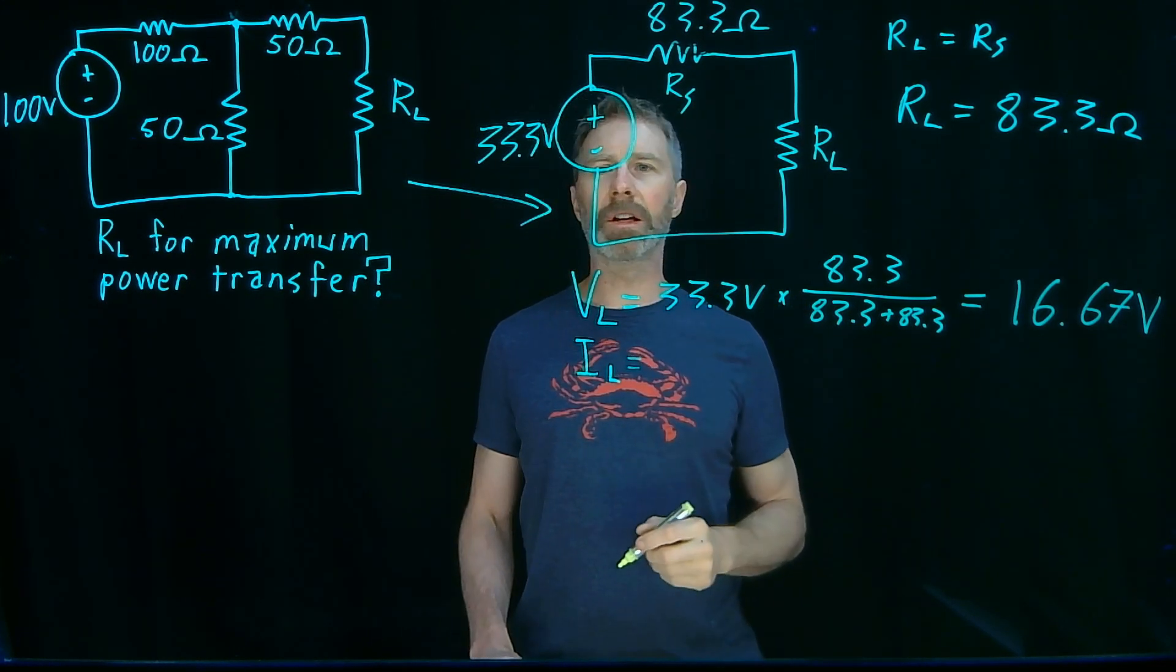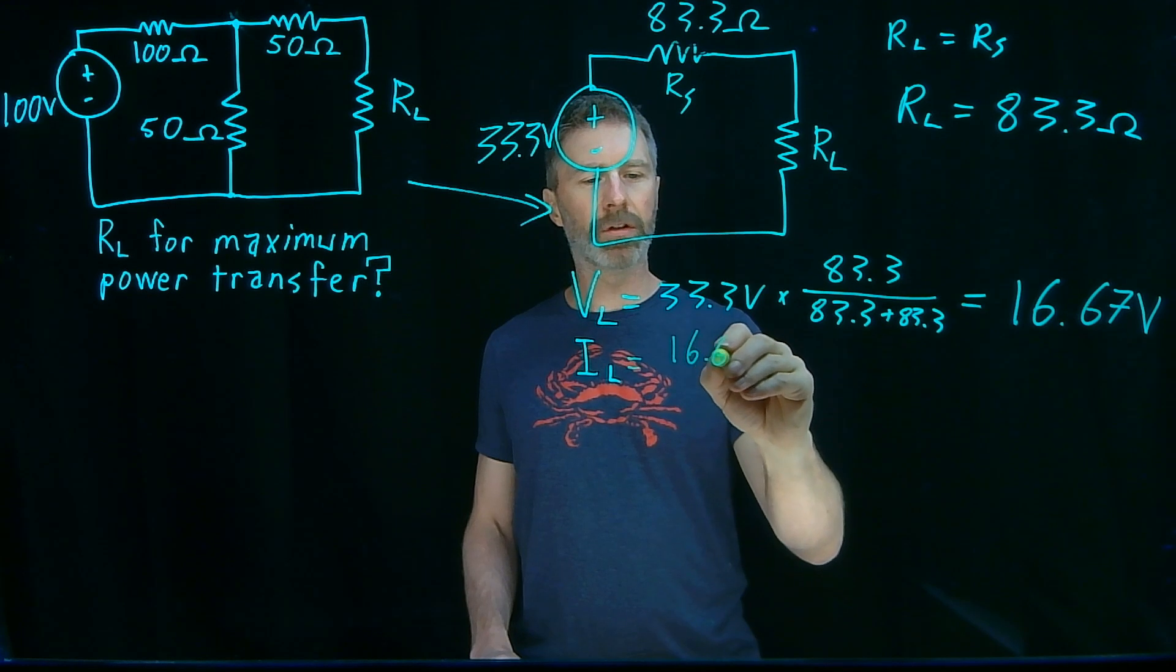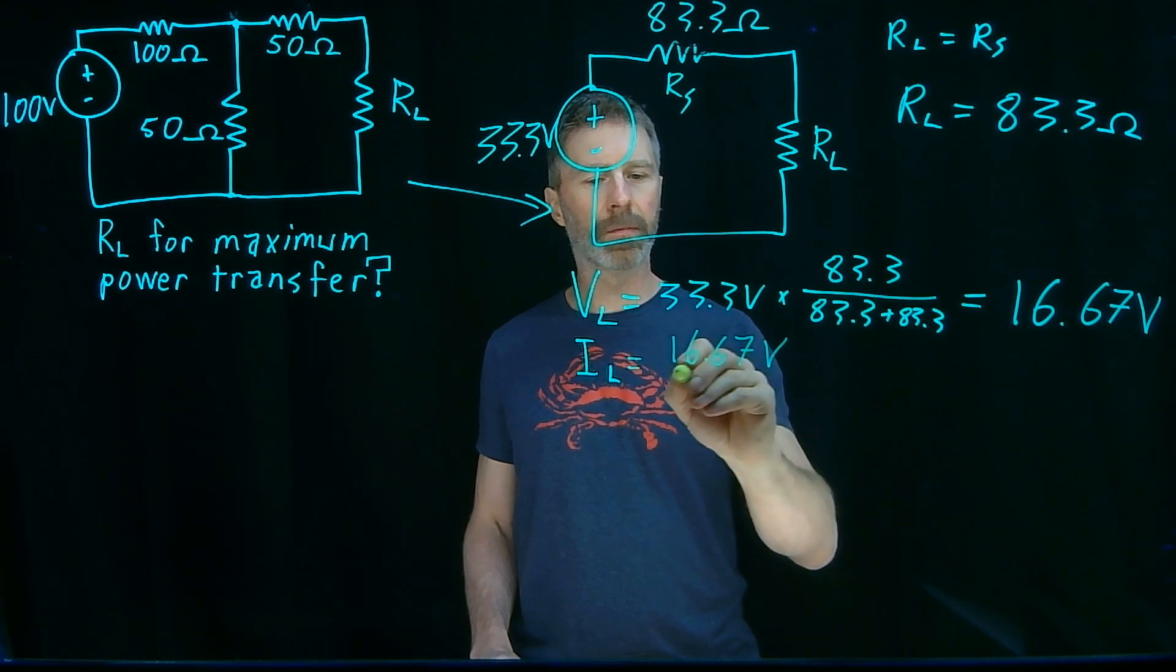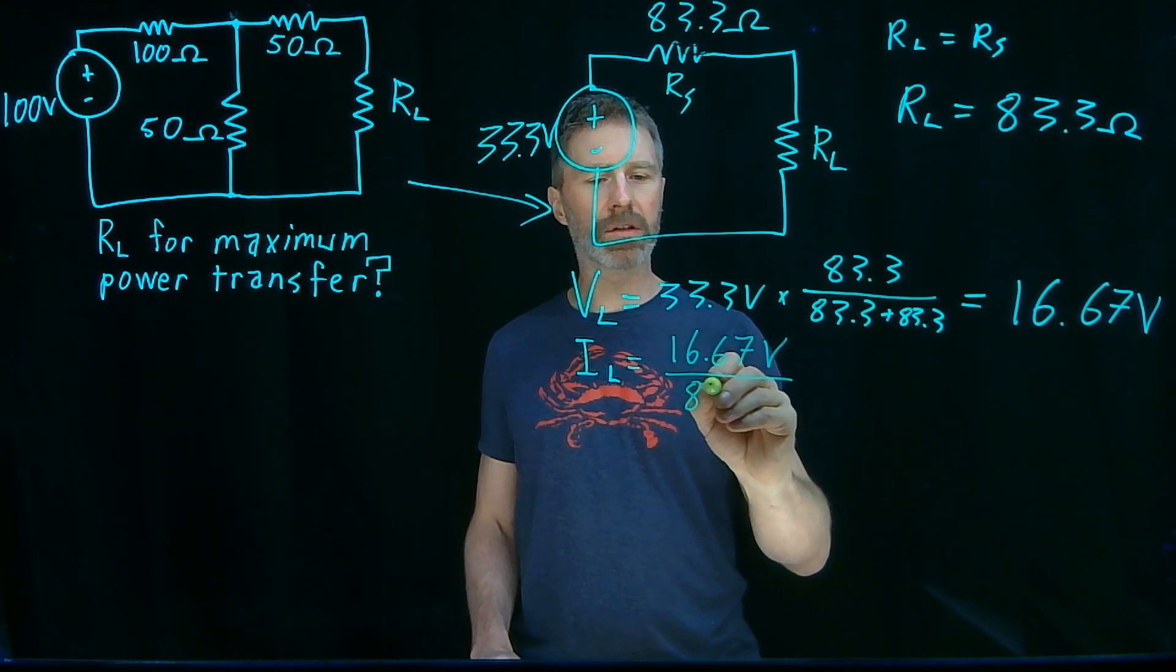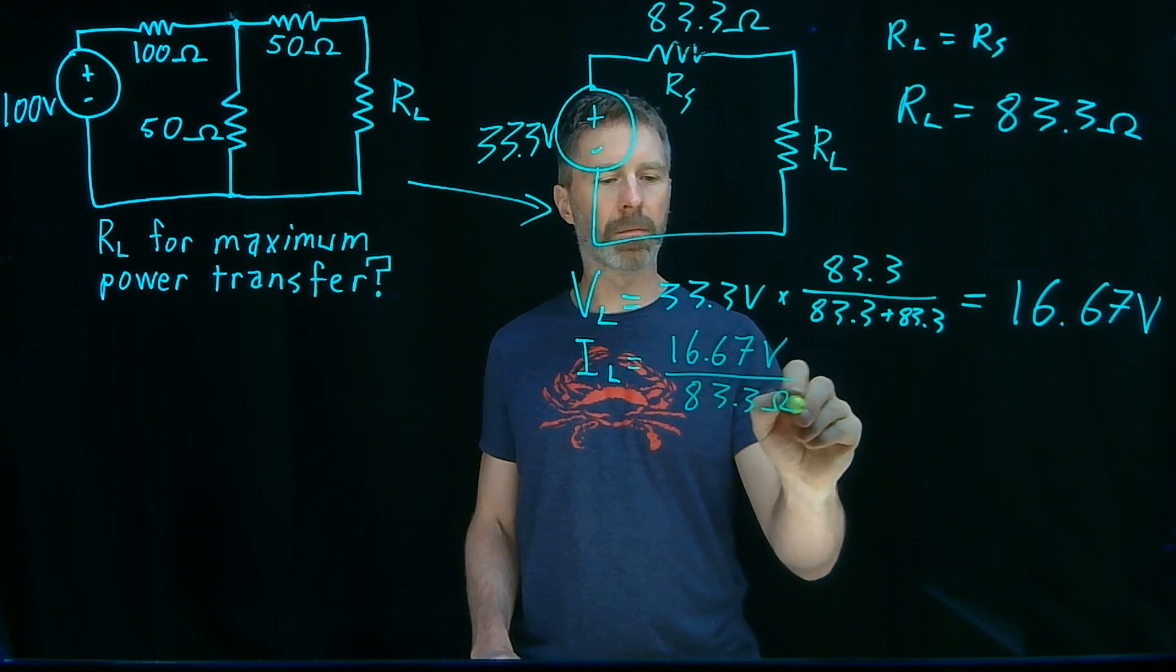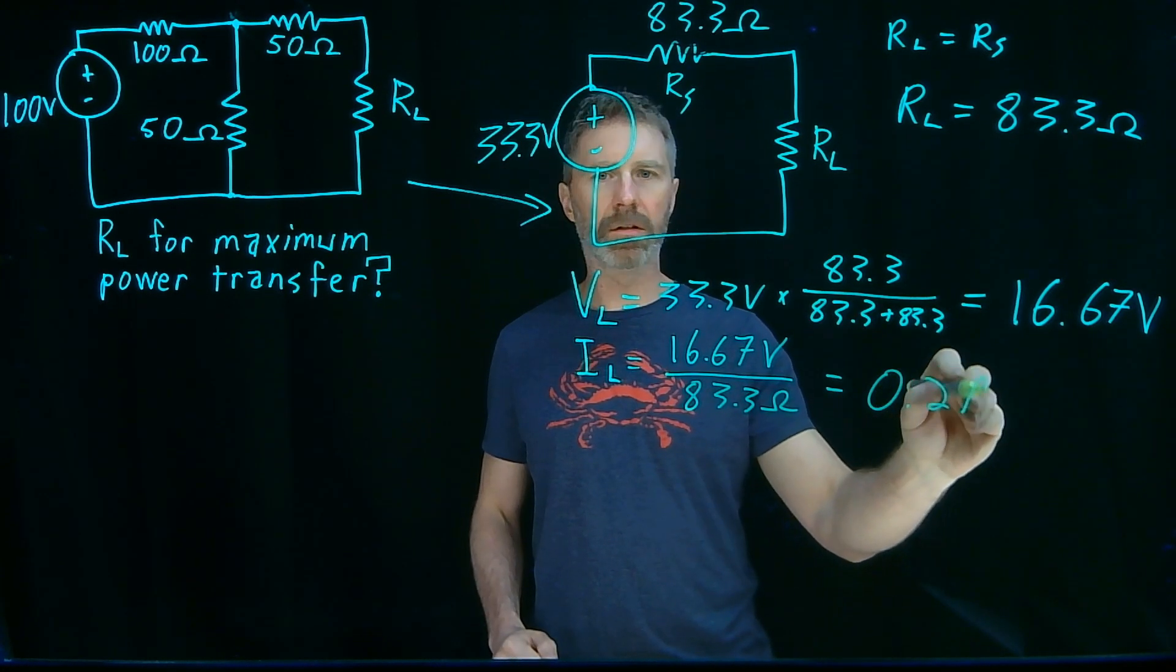Current through it, again, very simple. Voltage across that resistor divided by the resistance of it. And that's 0.2 amps.